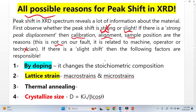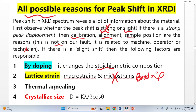The four factors are: doping, because of stoichiometric composition changes; lattice strain, where macrostrain causes the peak shift while microstrain causes broadening; thermal annealing, which also causes a peak shift; and crystallite size, which causes peak broadening but also causes peak shift.